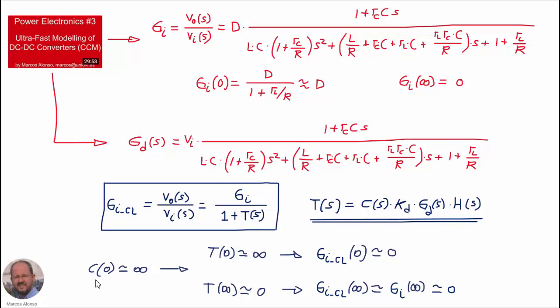We are assuming that the compensator has a pole at the origin to make the error null at steady state. So the gain of the compensator at zero frequency is infinite, meaning the loop gain at zero frequency is also infinite, and therefore the audio susceptibility in closed loop at zero frequency is equal to zero — which is good because we are perfectly removing all perturbations at low frequencies. At very high frequencies the loop gain is equal to zero, so the audio susceptibility in closed loop at very high frequencies is also equal to zero, making null any perturbations at very high frequency.